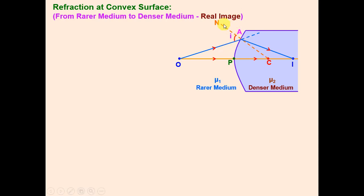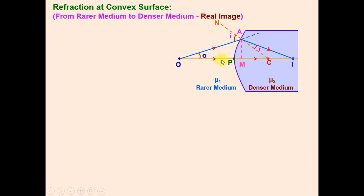The angle of incidence is the angle between the incident ray and the normal. A perpendicular is drawn from point A, where refraction takes place, and the angle of refraction is the angle between the refracted ray and the normal. For convenience in derivations, instead of working directly with these angles, we consider angles on the principal axis: alpha at the object O, beta where the image is formed, and gamma at the center of curvature.